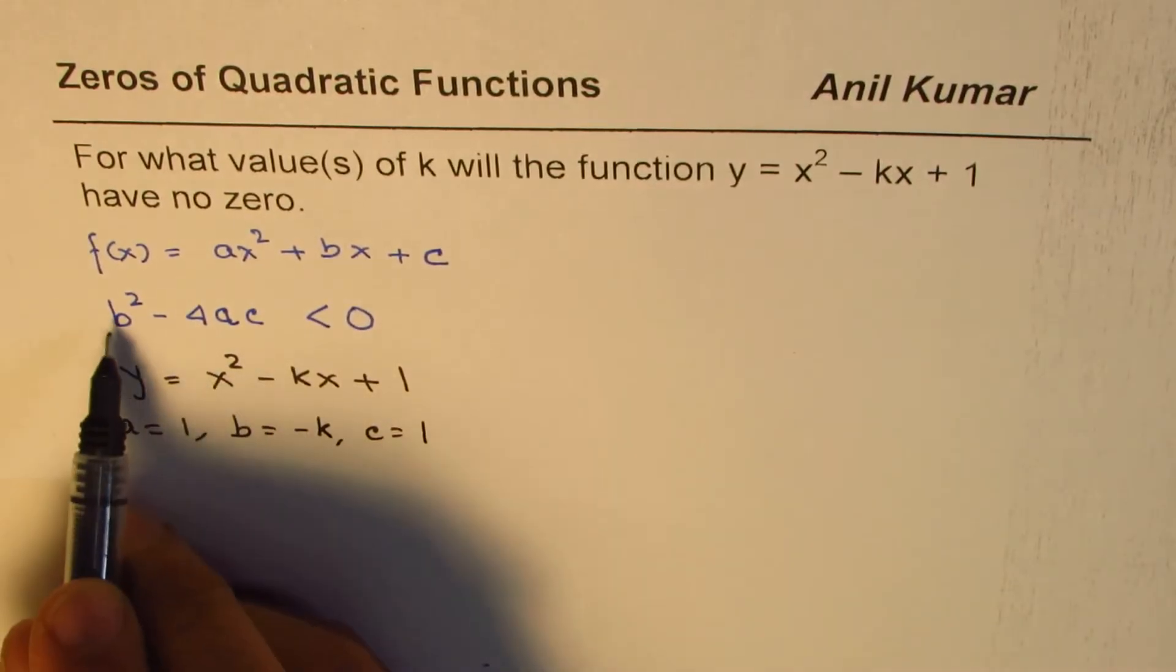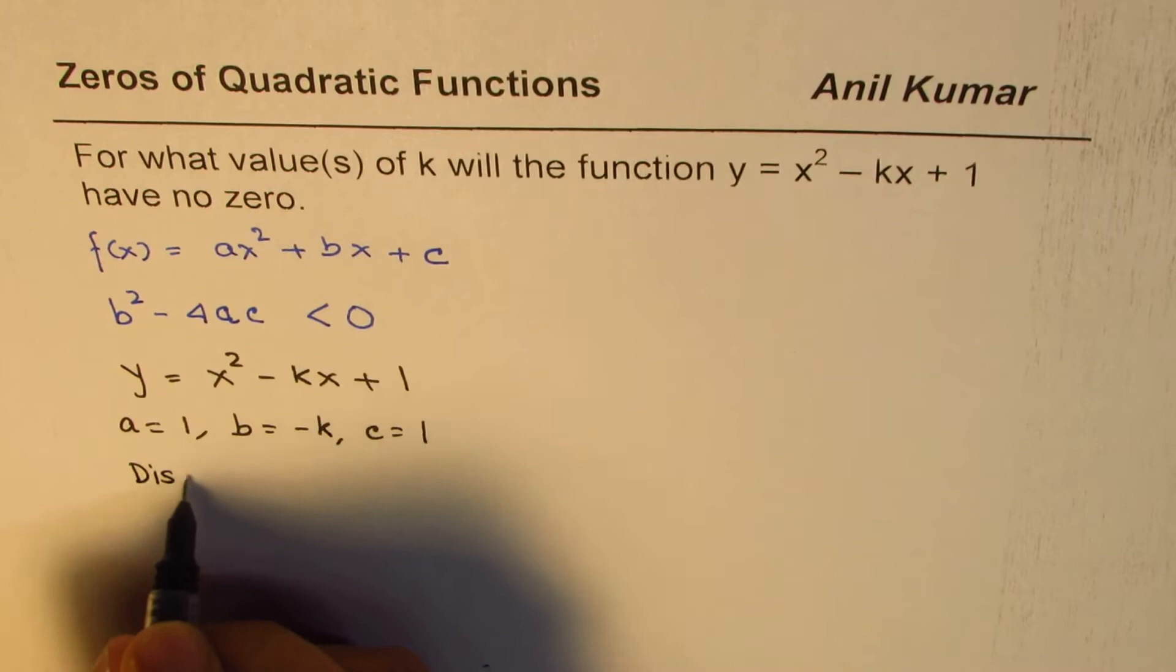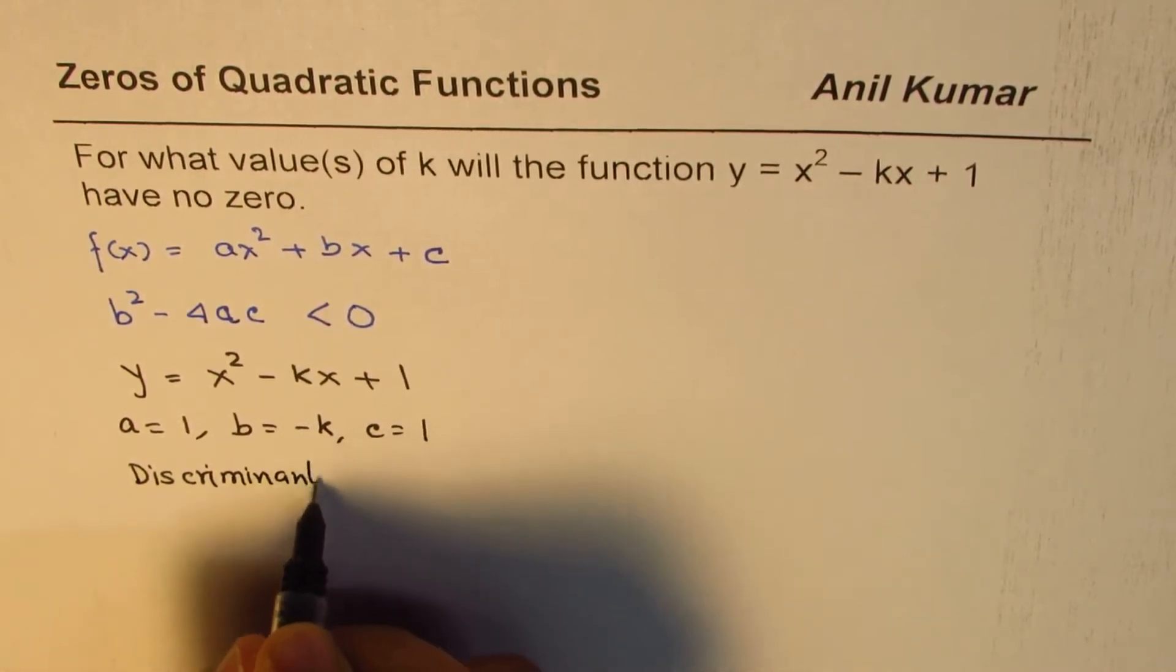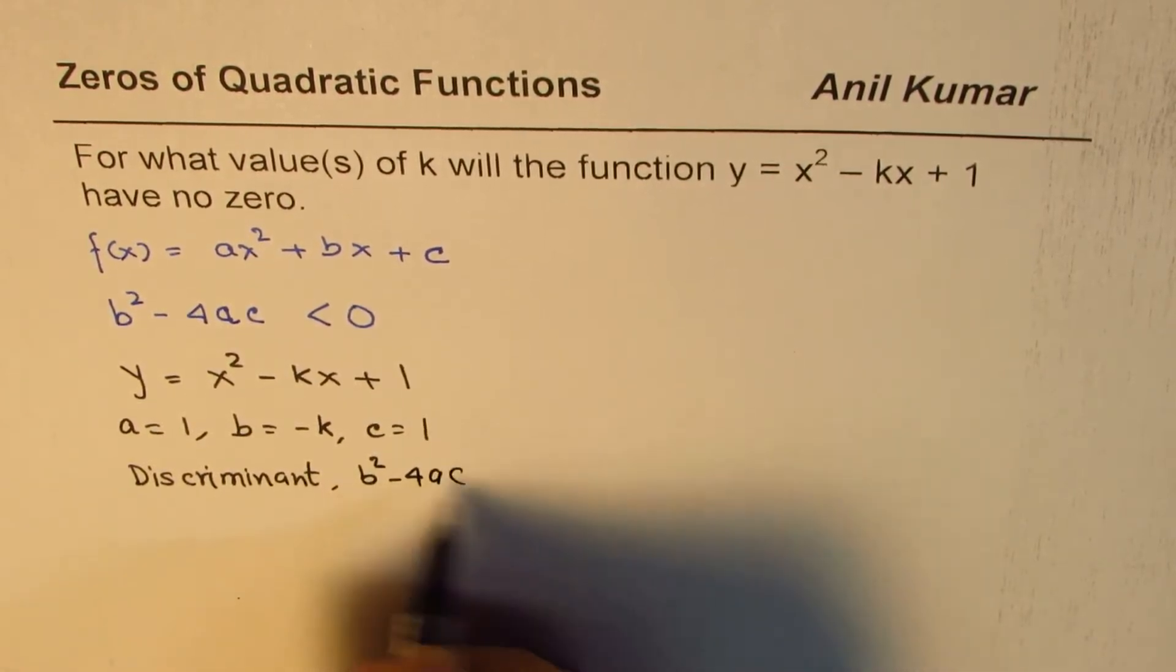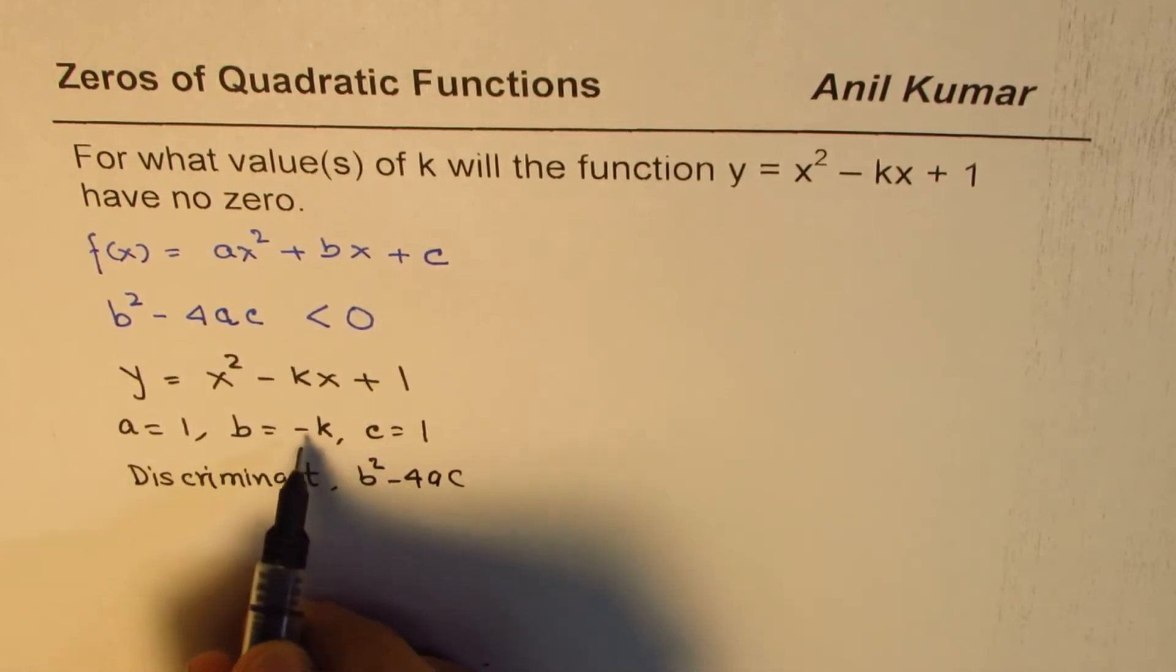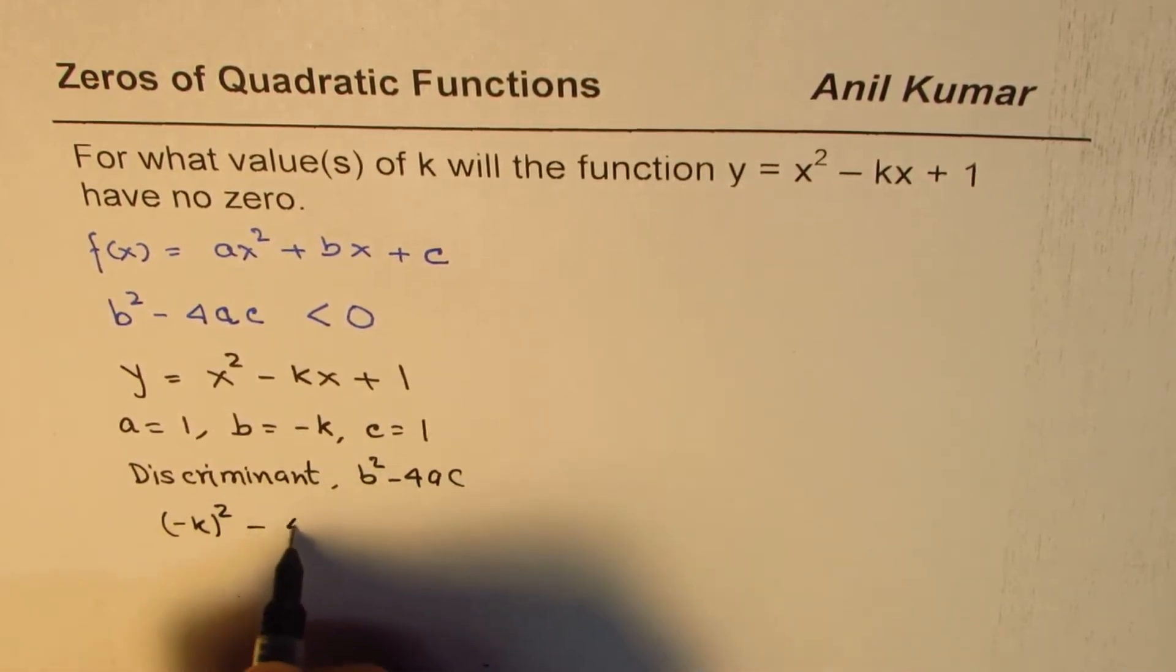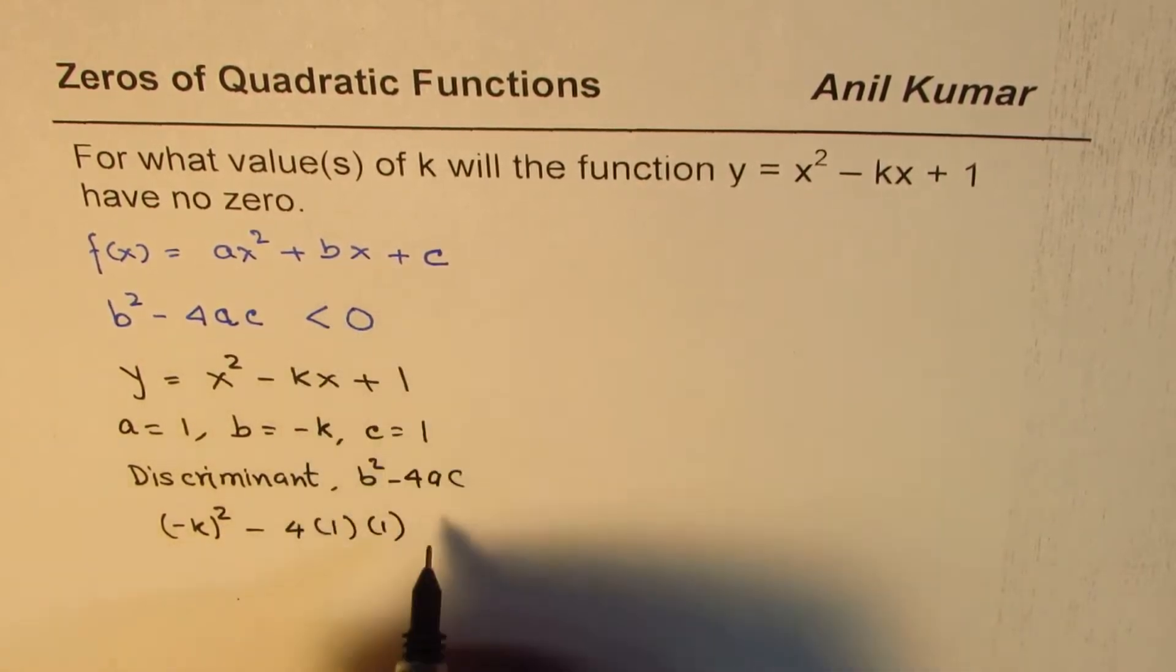Now b² - 4ac, or the discriminant - it's also known as discriminant test. So discriminant which is b² - 4ac, let's analyze this. b is -k, so we are saying (-k)² - 4 times 1 times 1, we want that to be less than zero.